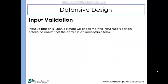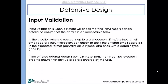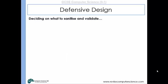Input validation is where a system will check that the input meets certain criteria to make sure that the data is in an acceptable form. So where a user signs up to an account and is asked to put in their email address, to make sure it is in the correct form, input validation might check to see whether there is an at symbol and whether it ends with a domain type. If it doesn't, any input will be rejected — so there's more chance that it will be a legitimate address. Any input that doesn't have an at symbol or finish with a domain type can be rejected in order to ensure that only valid data is entered by the user.